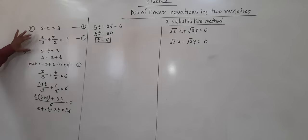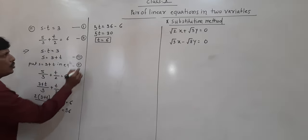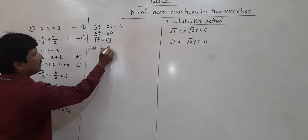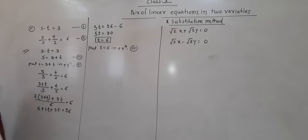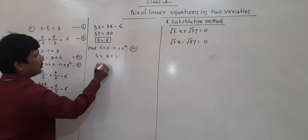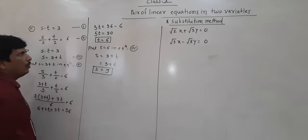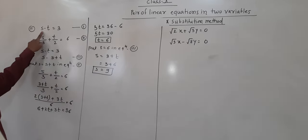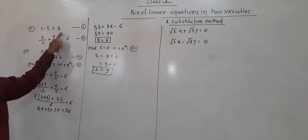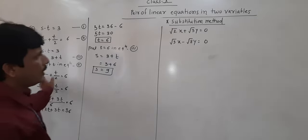Now we have the value of t, so we need to find s. We have s equal to 3 plus t from the earlier step. Putting t equal to 6: s equals 3 plus 6, so s equals 9. We have both values: t equals 6 and s equals 9. We can check the answer — if we put these in the first equation: 9 minus 6 equals 3, which is correct. So this is the second example solved by substitution.